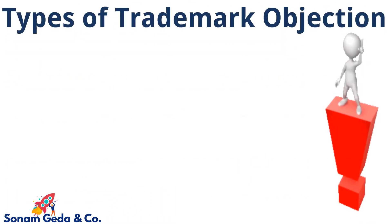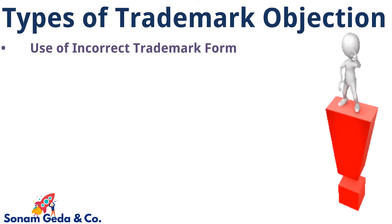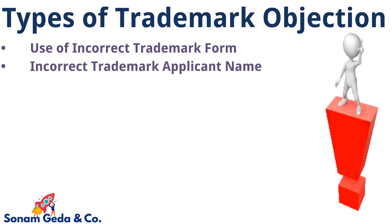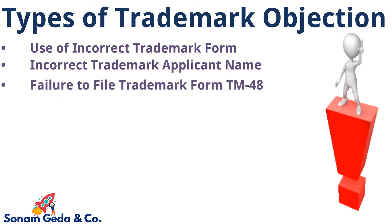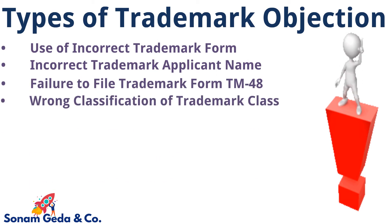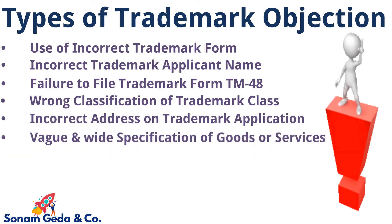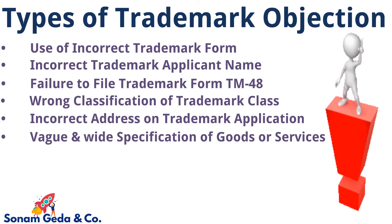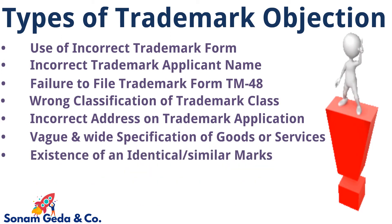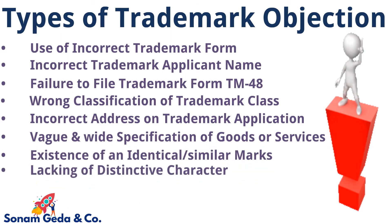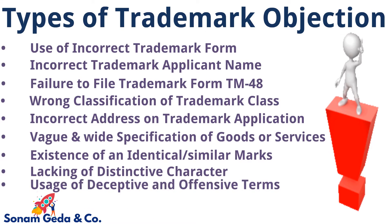Types of Trademark Objection: use of incorrect trademark form, incorrect trademark applicant name, failure to file trademark form 48, wrong classification of trademark class, incorrect address on the trademark application, vague and wide specification of goods and services, existence of identical or similar marks, and lacking of distinctive character.